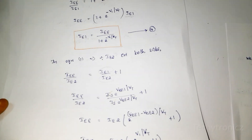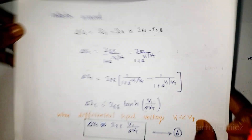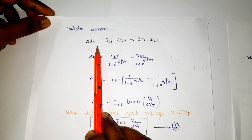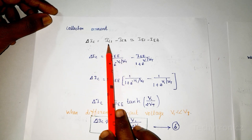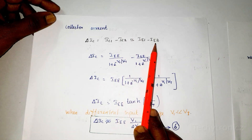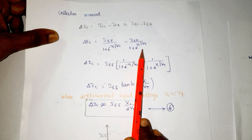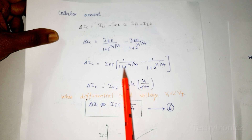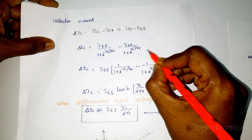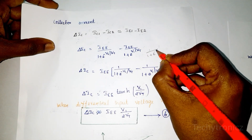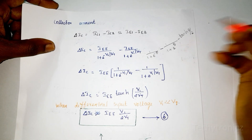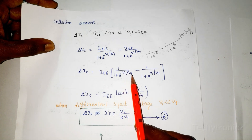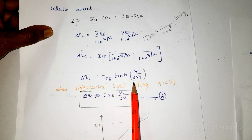Substituting the IEE1 and IEE2 values, the differential collector current ΔIC = IC1 − IC2, where IC1 ≈ IEE1 and IC2 ≈ IEE2. Taking IEE as common, and using the identity 1/(1 + e^(−θ)) − 1/(1 + e^θ) = tanh(θ/2), with θ = V1/VT, we get ΔIC = IEE × tanh(V1 / 2VT).